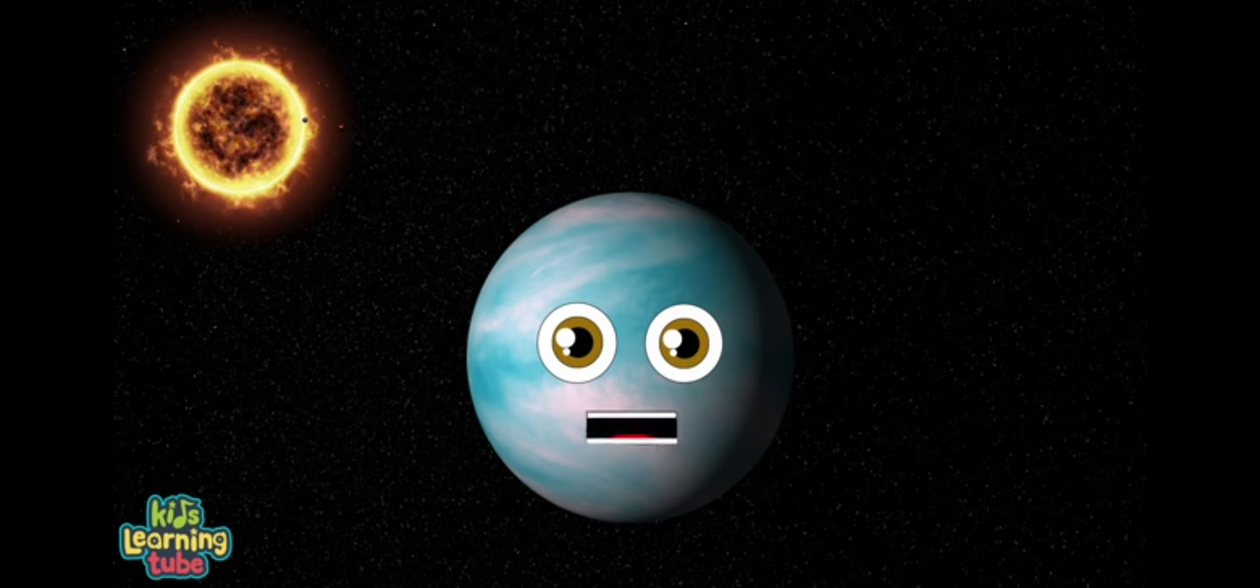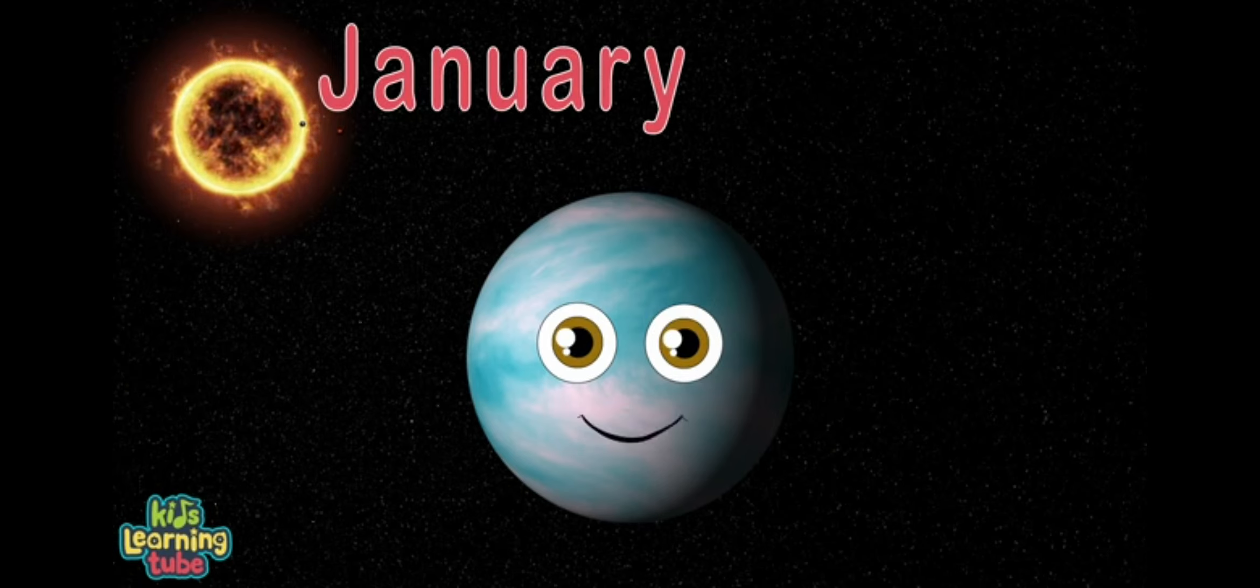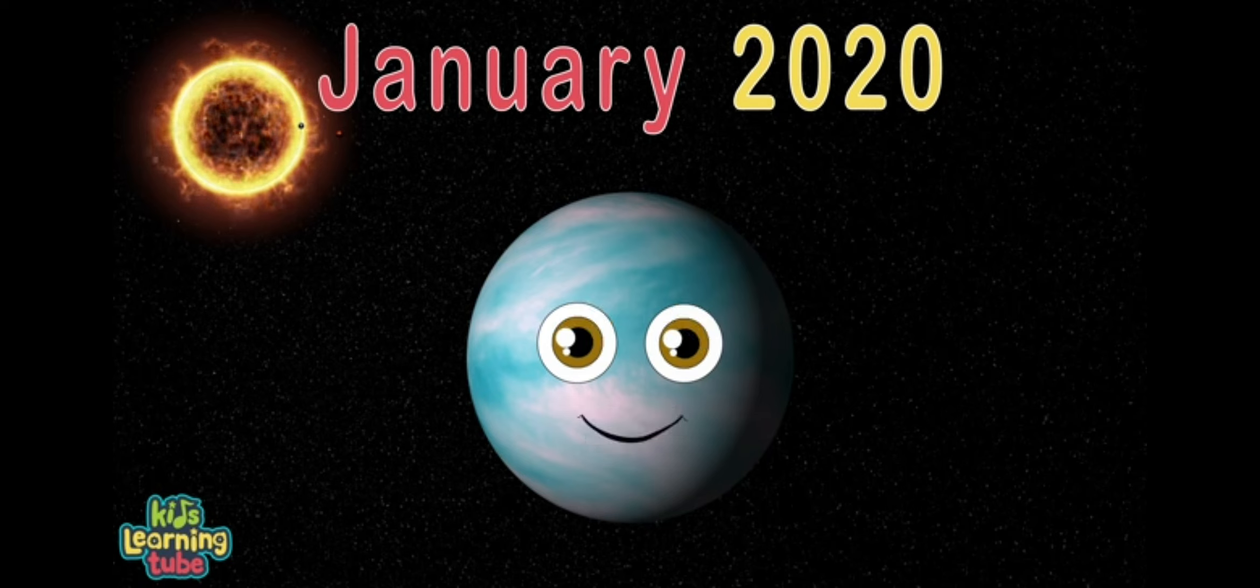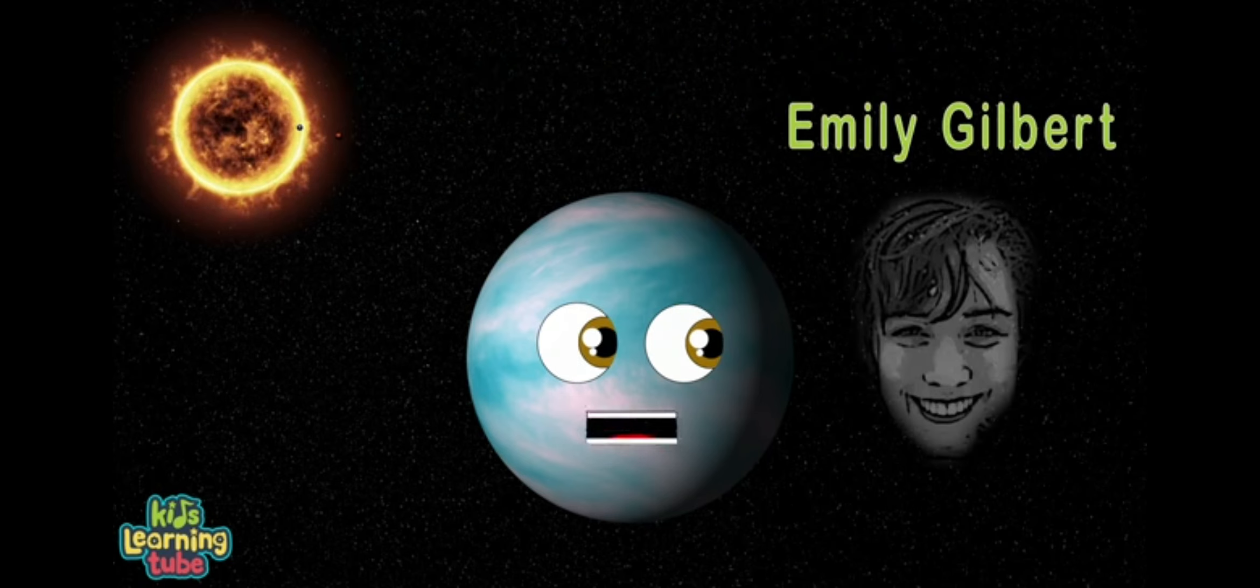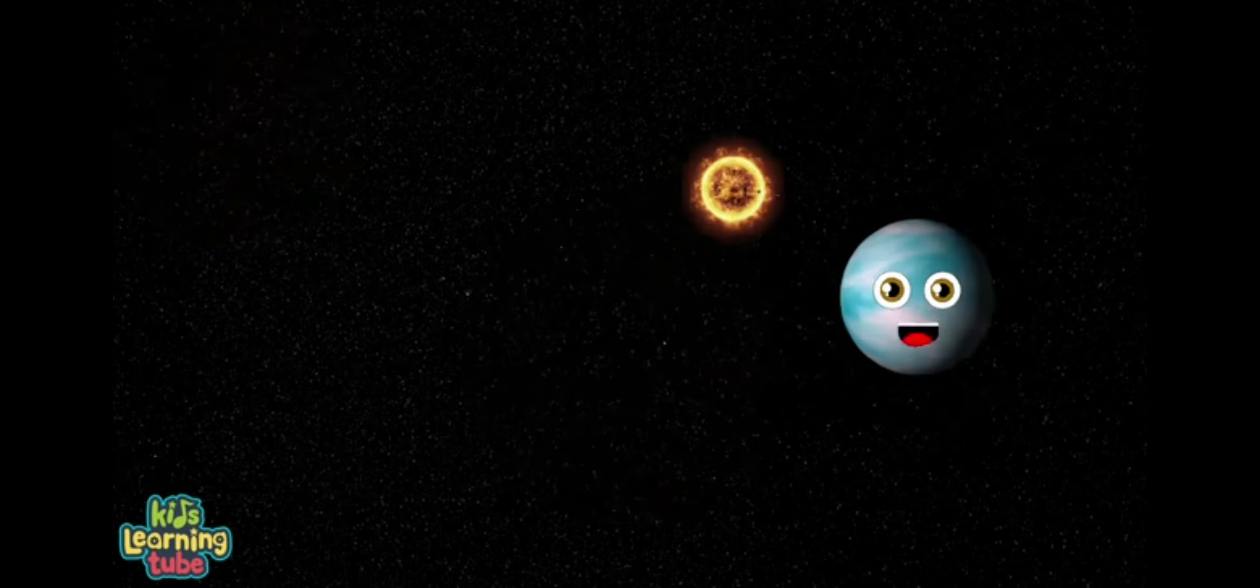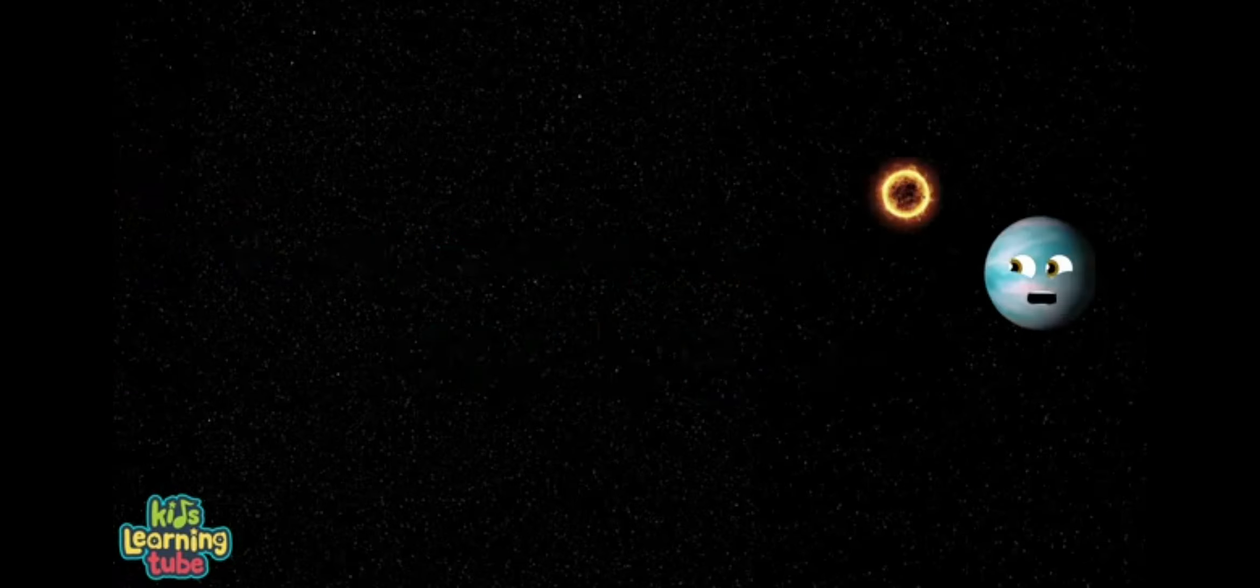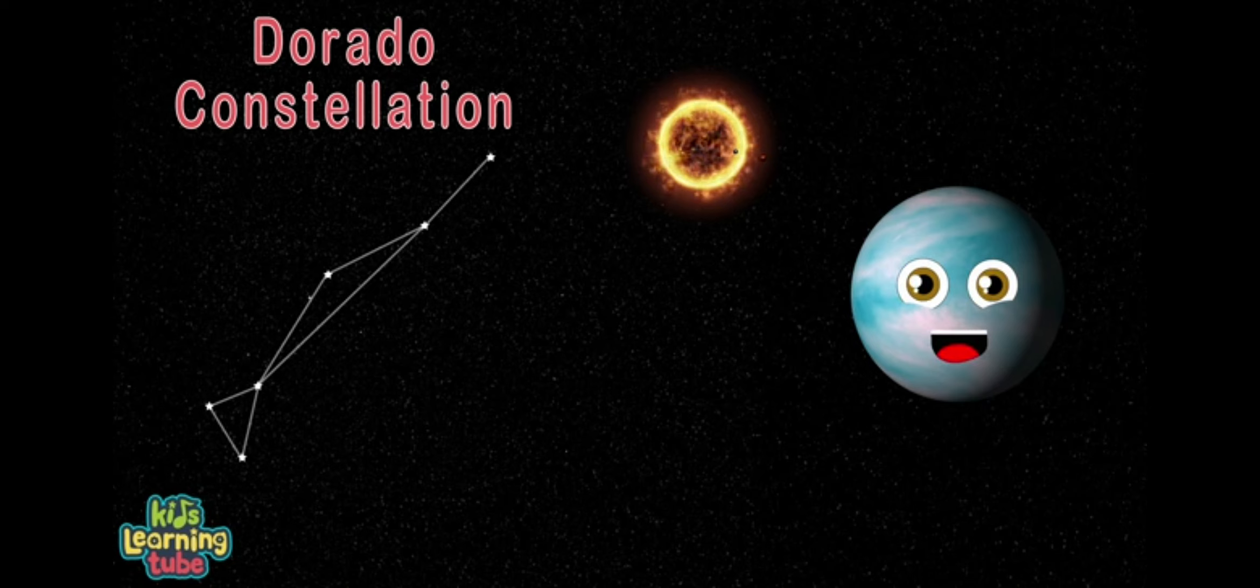I was discovered in January in the year of 2020 by Emily Gilbert while studying astronomy. I'm an exoplanet 101.4 light years away from Earth in the Dorado constellation. That's where I play.